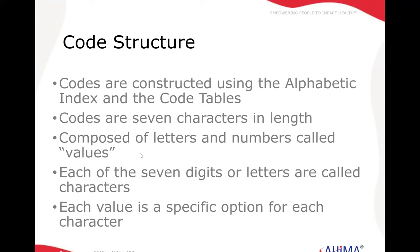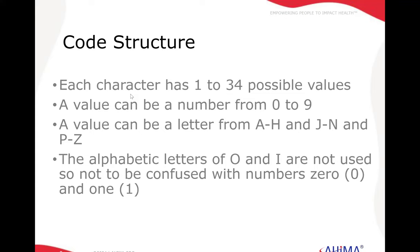The code structure is built using the alphabetic index and the code tables. The codes are always seven characters in length — this is different than ICD-10 CM coding. The seven characters are either letters or numbers, and these are called values. Each of these seven digits or letters are called characters, and each value is a specific option for each character. Each character — one through seven — has one to 34 possible values. A value can either be a number from zero to nine, or a letter from A through H, J through N, or P through Z. The letters O and I are not used, so they don't get confused with the number zero or the number one.